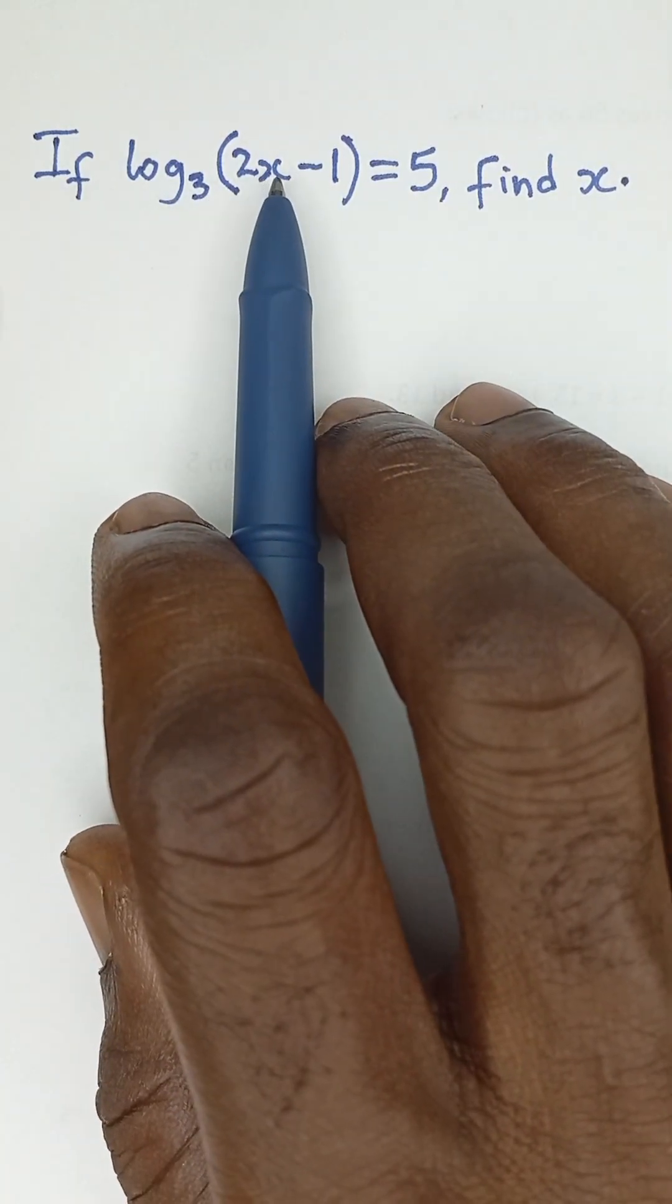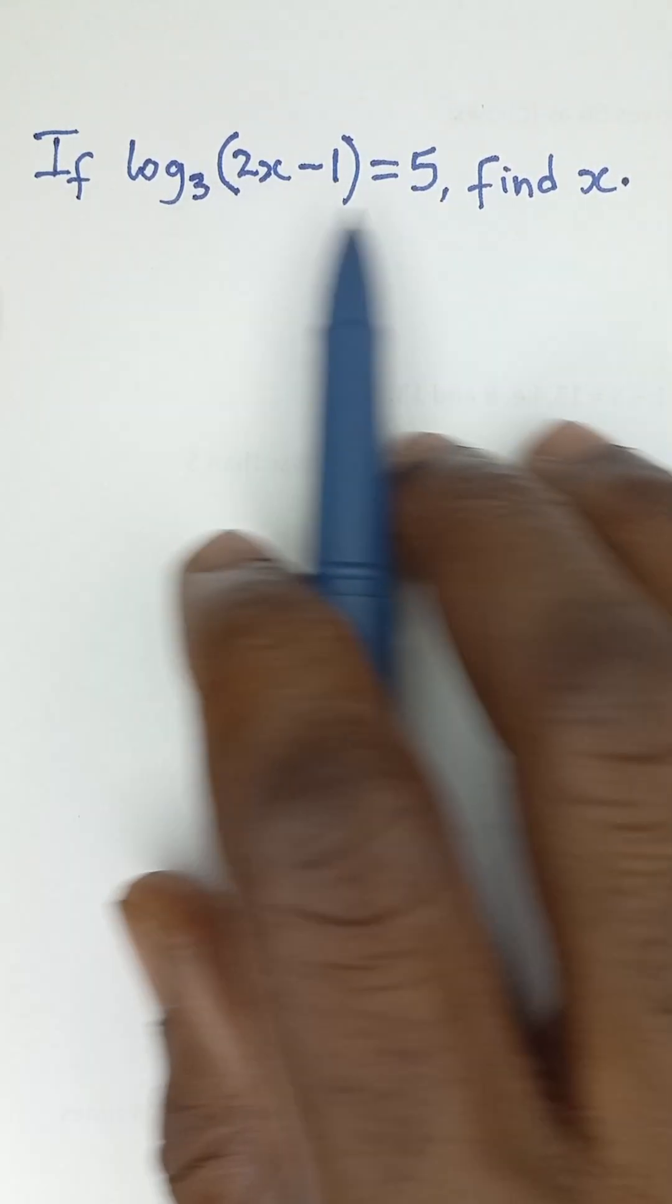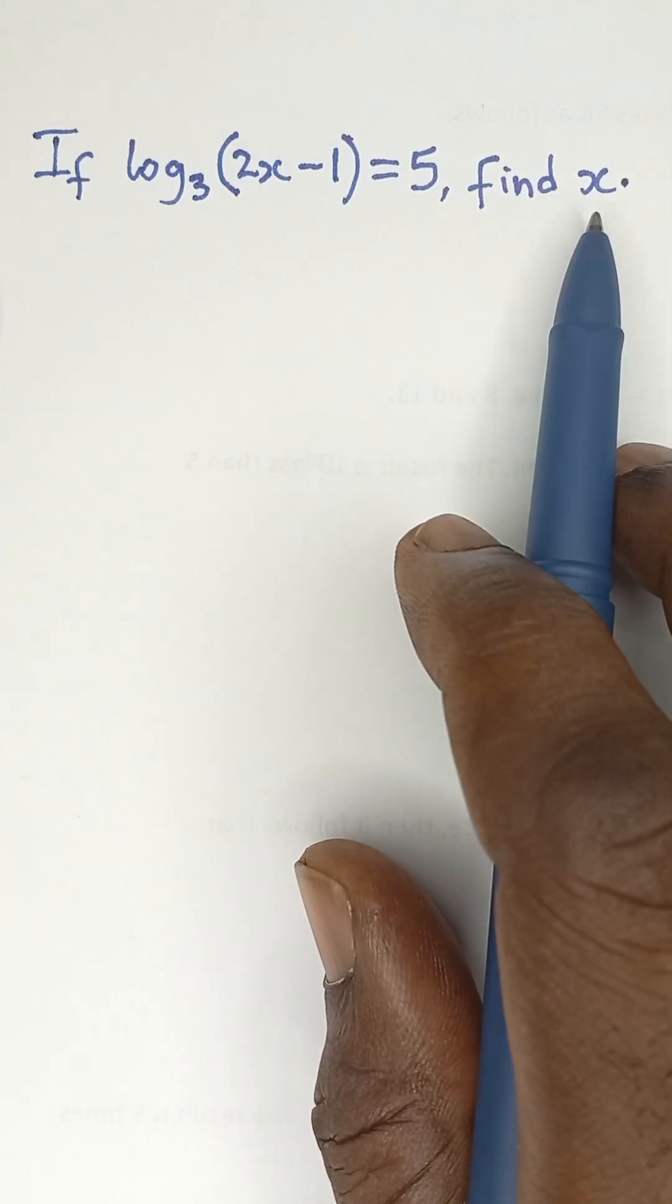If log base 3 of 2x minus 1 is equal to 5, find x.